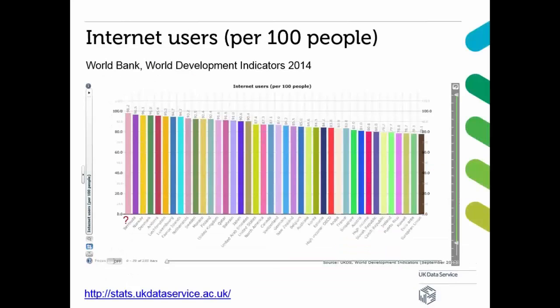My last example comes from the World Bank World Development Indicators 2014, about internet users per 100 people across all countries. I've left the first country out — the one in pink at 98.2% — and I have a question for you. I'll give you a couple more seconds to look at this bar chart and then I'm going to ask you: what do you think that first country is? Let me launch this poll.